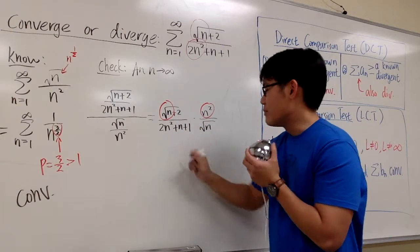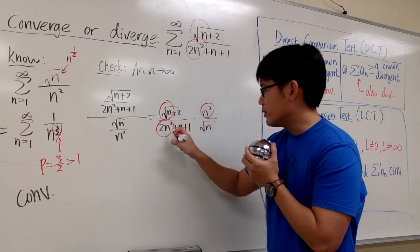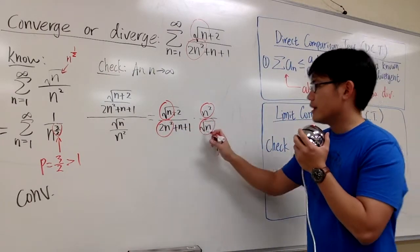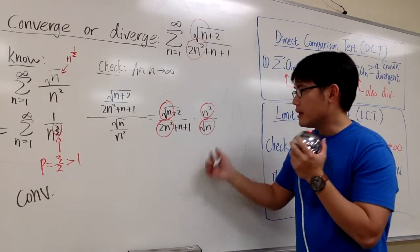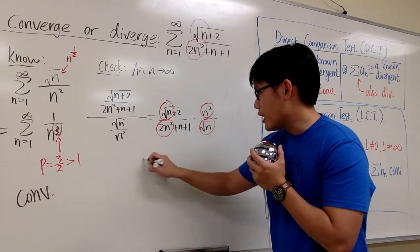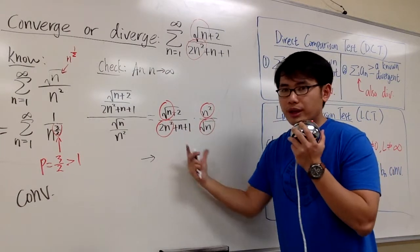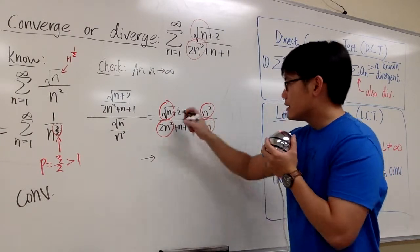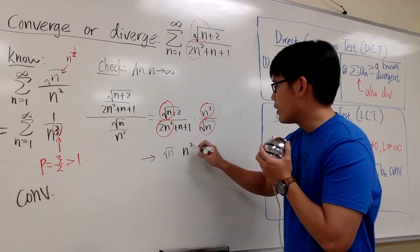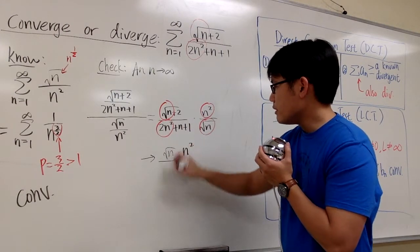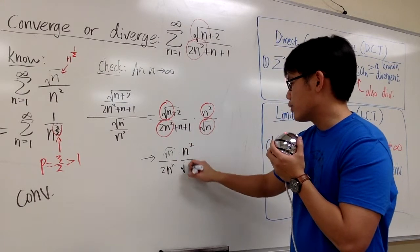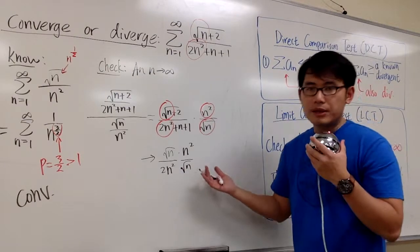On the bottom, we can just look at 2n squared times the square root of n. So this is square root of n times n squared over 2n squared times square root of n. That's pretty much what's happening.